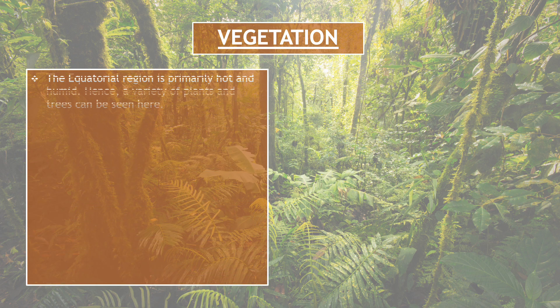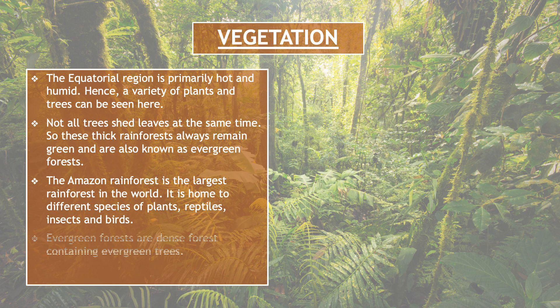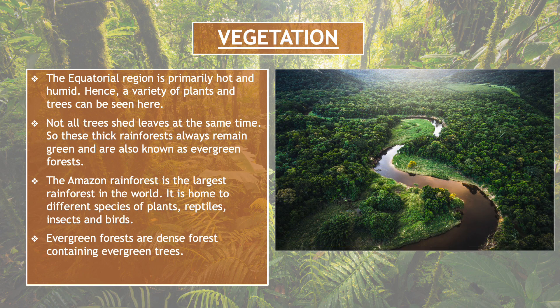Let's talk about the vegetation of the equatorial region. The equatorial region is primarily hot and humid, hence a variety of plants and trees can be seen here. Not all trees shed leaves at the same time, so these thick forests always remain green and are also known as evergreen forests. सारे trees एक ही time पर leaves नहीं shed करते, जिसके कारण forests हमेशा green देखने को मिलते हैं और इन्हें evergreen rainforest भी कहा जाता है.